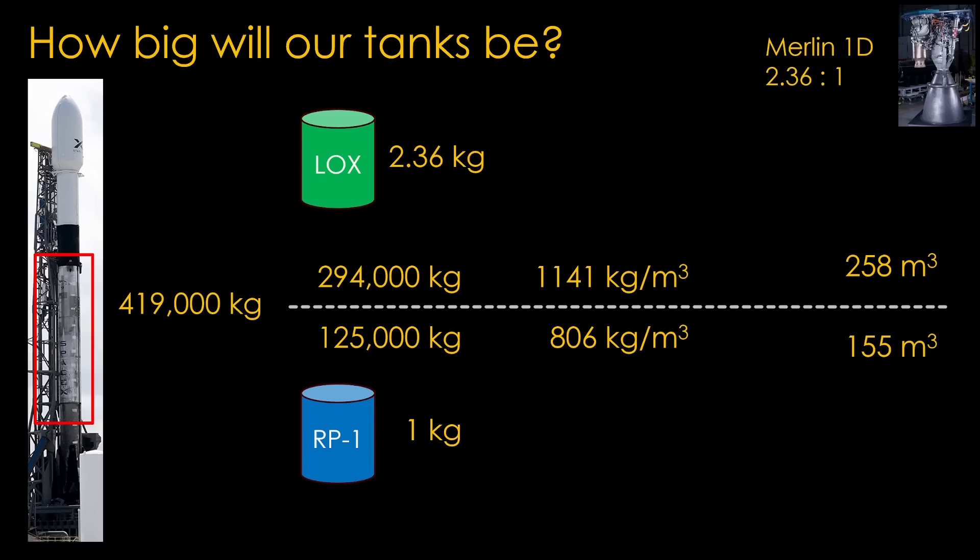That would be the right answer for most rockets, but SpaceX has to be different. They take advantage of the fact that if you chill the propellants, they get denser, and you can therefore stuff more mass into the same space. This works pretty well for liquid oxygen, and you can get about 10% more density, up to 1,255 kg per cubic meter. RP1 is less chillable, as if you cool it too much, it turns to gel, so we only get about 2% more density, up to 822 kg per cubic meter. Redo the math, and we get 234 cubic meters for the liquid oxygen, and 152 cubic meters for the RP1. It's about 6.5% savings in volume.